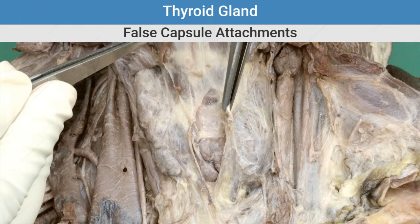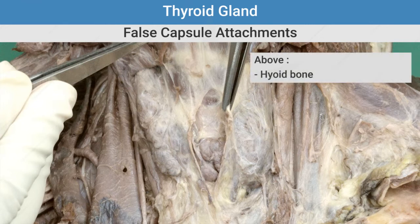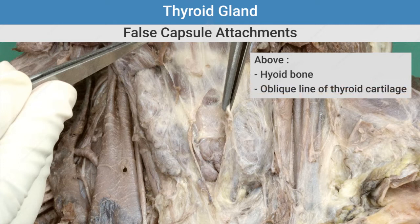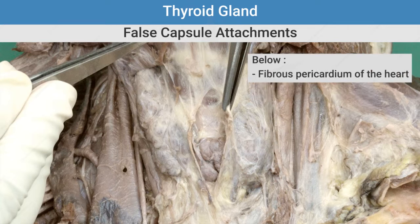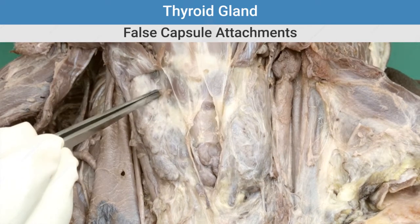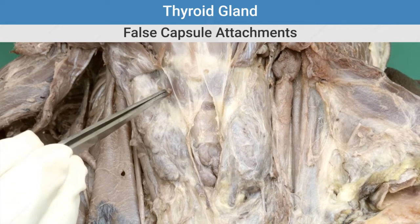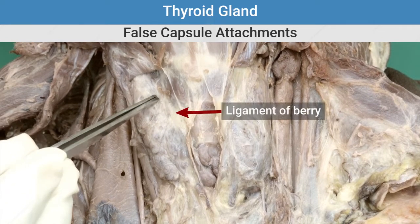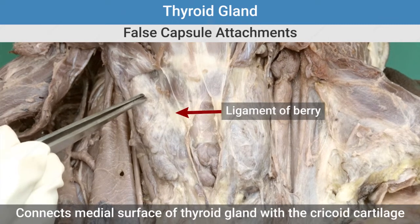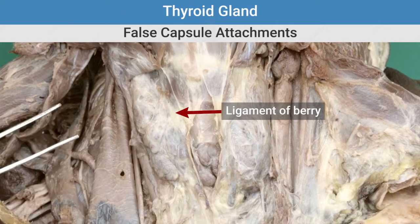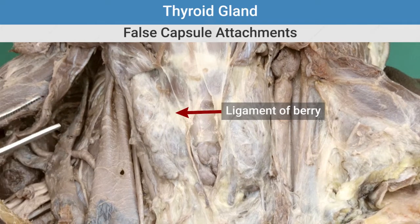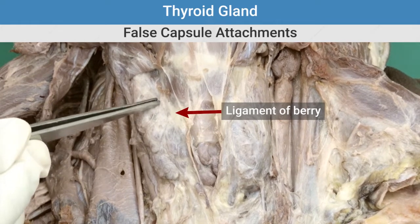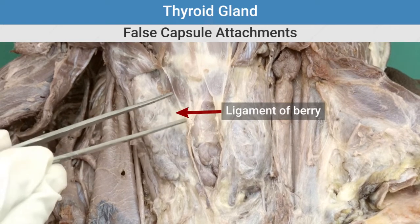Attachments of the false capsule: above, it is attached to the hyoid bone in the midline and the oblique line of the thyroid cartilage laterally. Below, the false capsule blends with the fibrous pericardium. From the medial surface of the lateral lobe, this false capsule is thickened to form the ligament of Berry, which connects the medial surface of the thyroid gland to the cricoid cartilage. This ligament of Berry is responsible for movement of the thyroid gland up and down during deglutition.